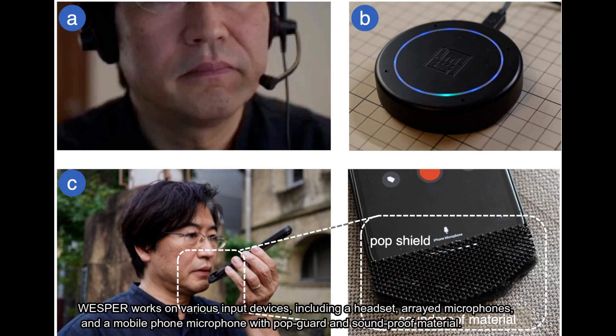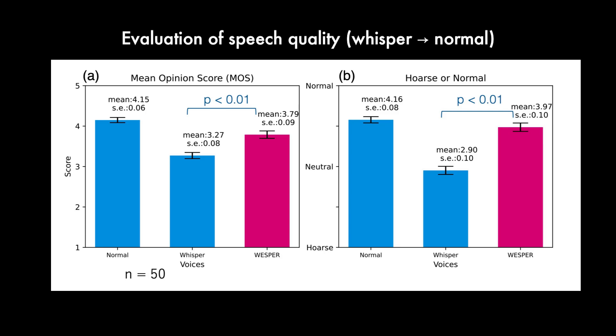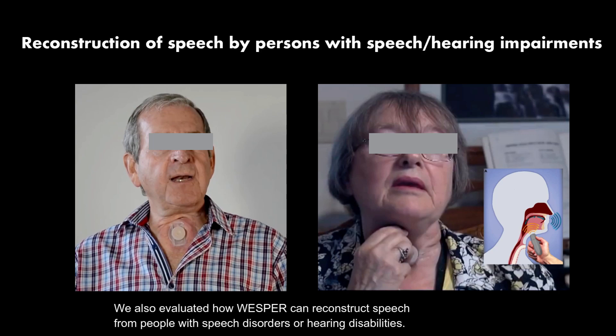WESPER works on various input devices, including a headset, arrayed microphones, and a mobile phone microphone with pop-guard and soundproof material. Based on the evaluation, WESPER converted voice has higher mean opinion scores, or MOS, than whisper voices. We also evaluated how WESPER can reconstruct speech from people with speech disorders or hearing disabilities.